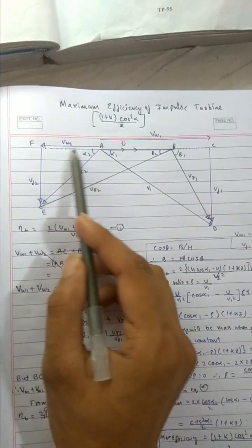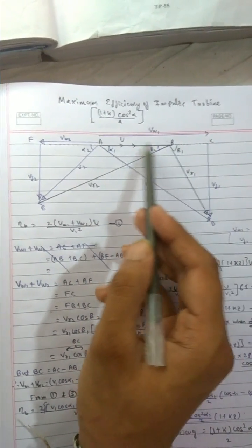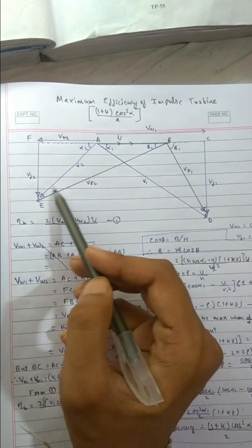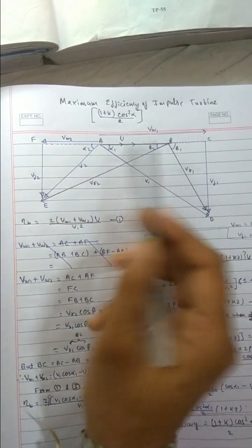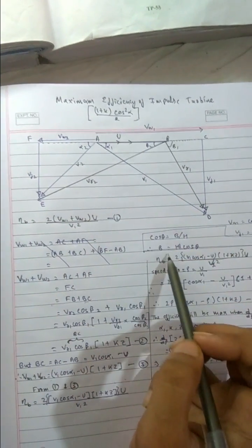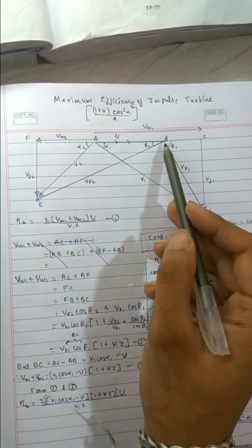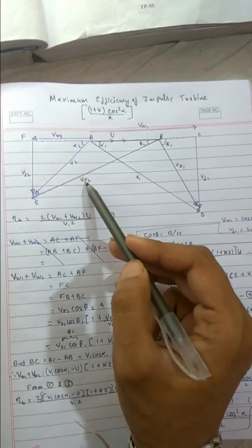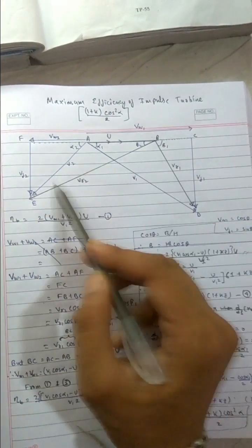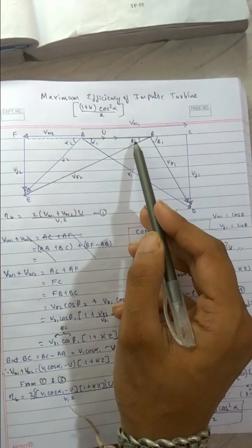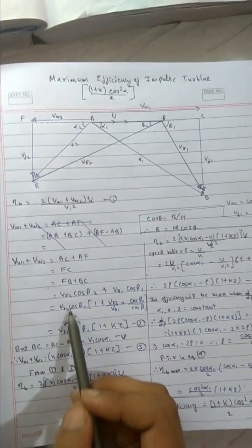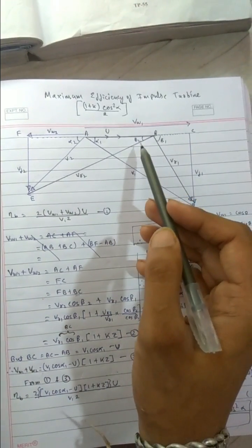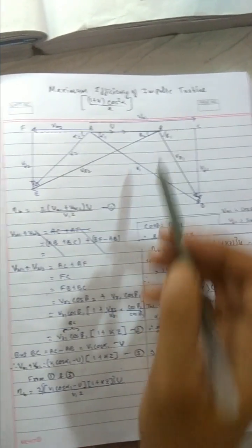Now FB, what is our FB? This is the base of this triangle, this big triangle. This is the base and we know base equals to hypotenuse cos theta. Hypotenuse is this VR2 cos theta. So angle for this big triangle is this, so in place of theta it is beta 2. So FB equals to hypotenuse VR2 cos beta 2.